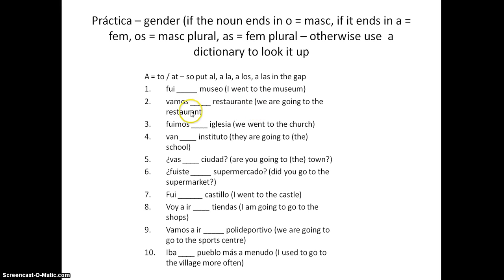The next one: RESTAURANTE — we're going TO THE restaurant. Do we put AL, ALA, ALOS, or ALAS? I said that if a noun ends in O or A we know the gender, but this one ends in E, so you might need to look it up in the dictionary.